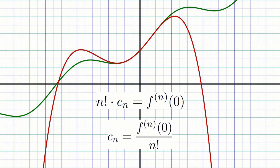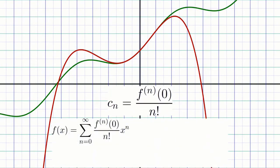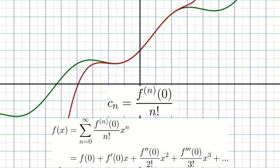Thus, in the limit, we obtain a general formula for the power series representation of any function. f of x equals sigma sum from n equals 0 to infinity of the n-th derivative of f at 0 divided by n factorial times x to the power n, which, when written out term by term, is f of 0 plus f prime of 0x plus f double prime of 0 over 2 factorial times x squared plus f triple prime of 0 over 3 factorial times x cubed, and so on.